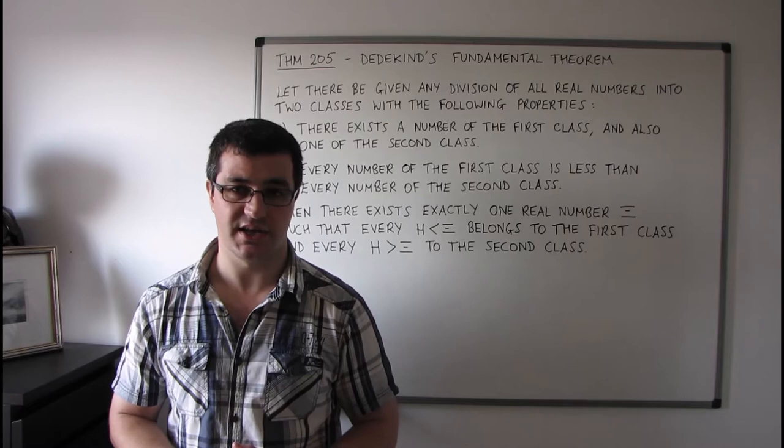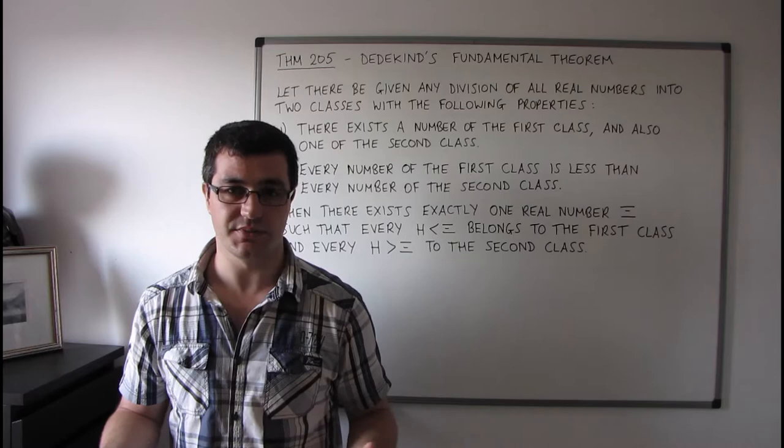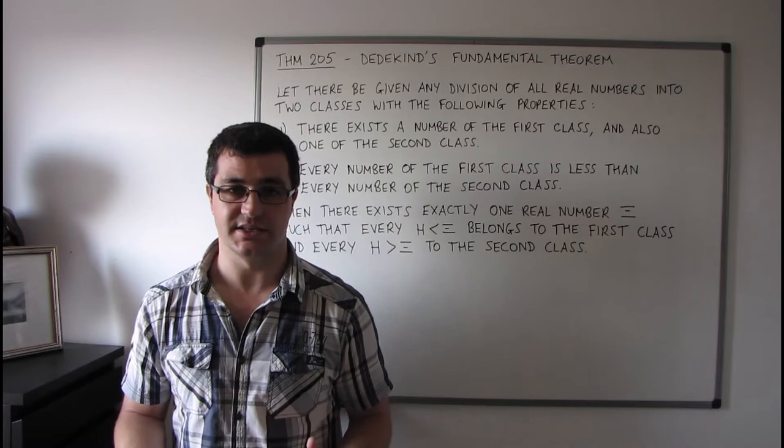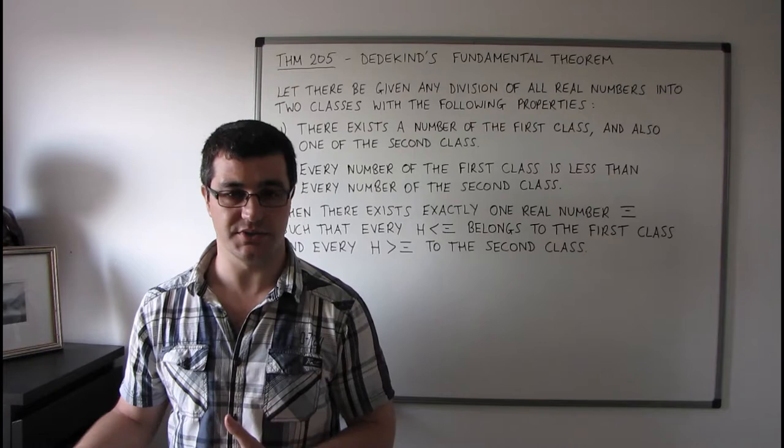What we're aiming to do with this theorem is effectively show that our system of real numbers that we've constructed over the last few videos is in a sense complete — that there are no gaps, that there are no numbers missing where we should expect numbers to be. So let's have a look at the theorem.